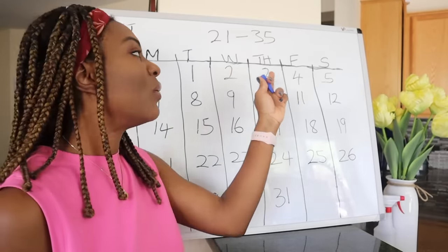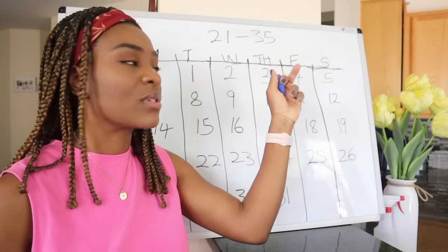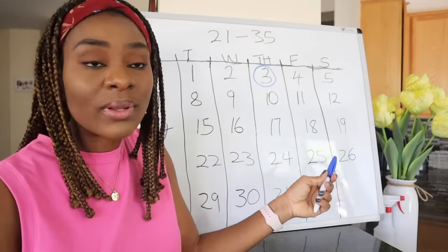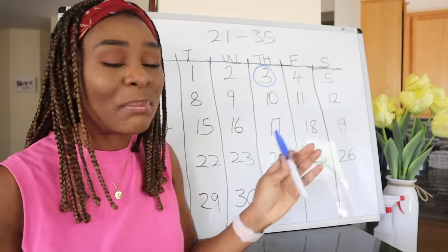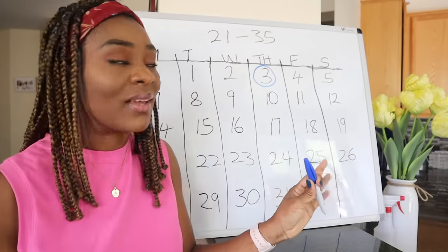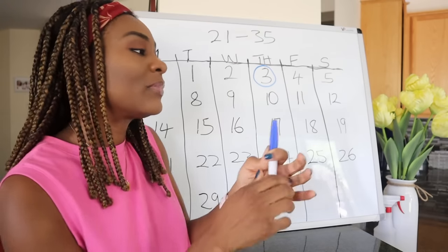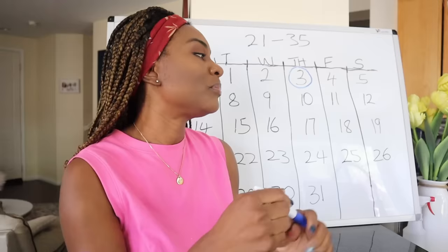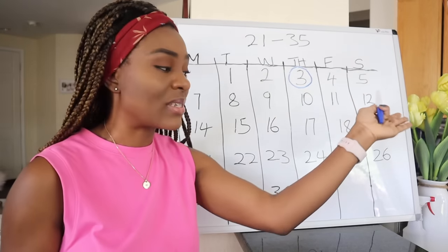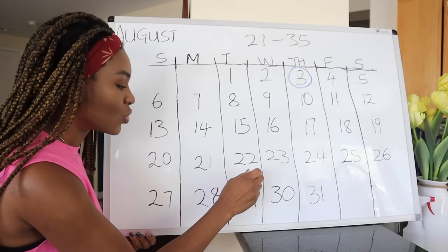Let's say my period started on the 3rd of August — the first day I saw any blood was the 3rd of August, so I'm going to circle this. When calculating your cycle length, forget about the number of days you bled. Just mark the first day you saw your period on the calendar and then wait for your next period to come. Let's say my next period came on August 29th, so we're going to circle the 29th.